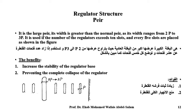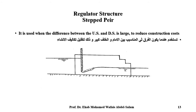A large pier is one whose width is greater than a normal pier, with its width ranging from 2P to 3P. It is used when the number of regulator slots exceeds ten — for example, every five slots are grouped as shown in the figure. The benefits are: increasing the stability of the regulator base and preventing complete collapse when the difference between upstream and downstream levels is large, as well as reducing construction costs.